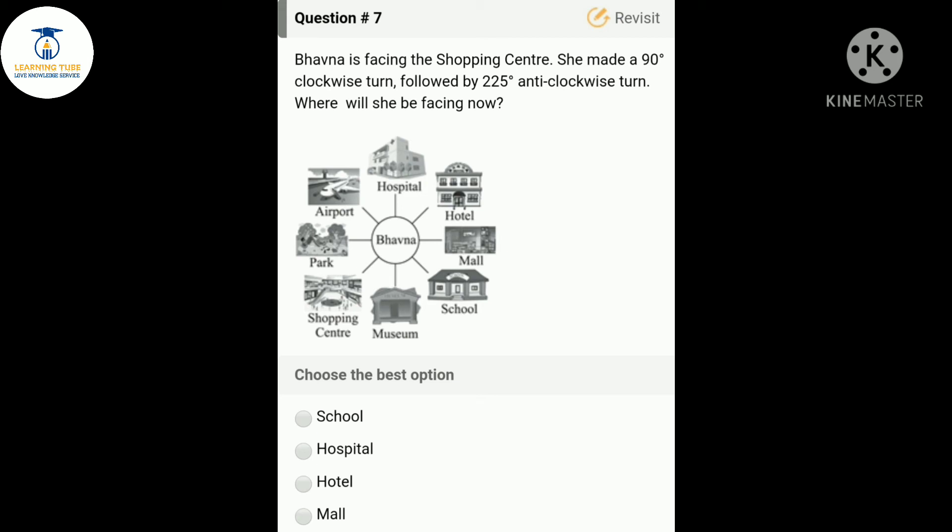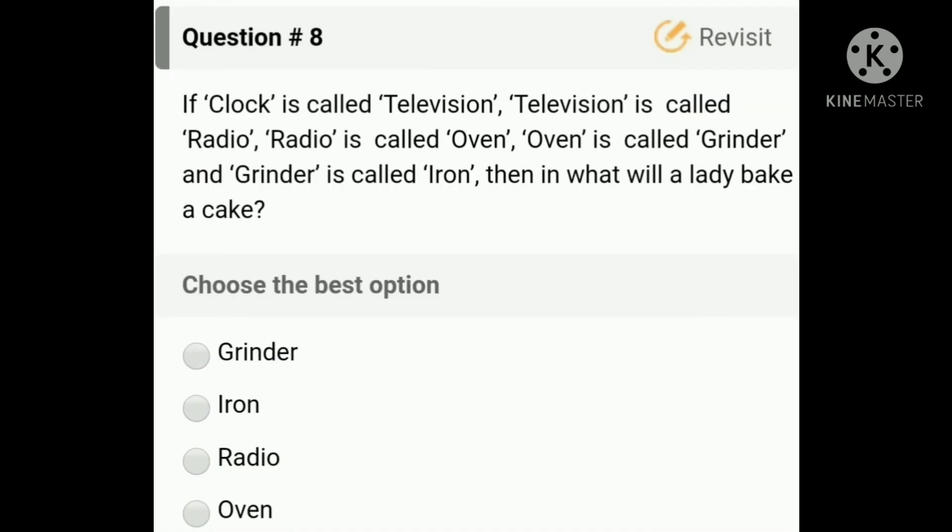Question number eight is a fun type question. If clock is called television, television is called radio, radio is called oven, oven is called grinder, and grinder is called iron, then in what will a lady bake a cake? We know that a lady bakes a cake in oven, and according to the question, oven is called grinder. So a lady shall bake a cake in the grinder, which is option A.